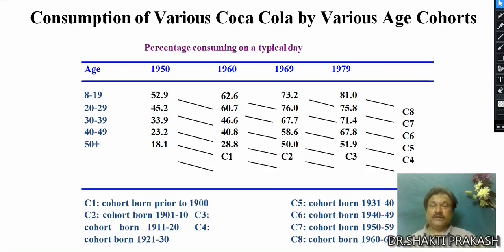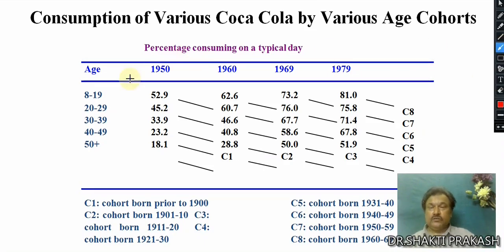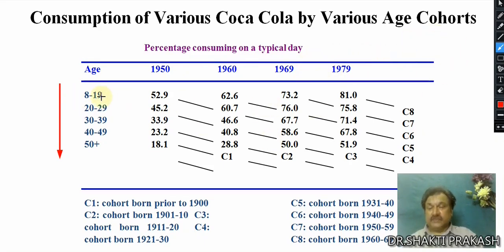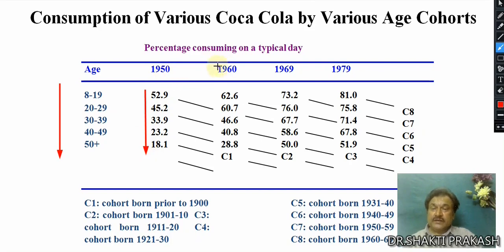For example, consider the Coca-Cola cohort analysis by various age groups. On one axis is the age group, and on the other axis is the percentage consumption across different decades — 1950s and onwards. For the 8 to 19 years age group, consumption in 1950 was increasing, but then it was decreasing in every subsequent year. By 1979, it was also decreasing. This illustrates how consumption patterns vary across age groups and time periods.